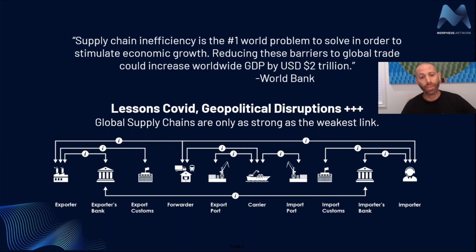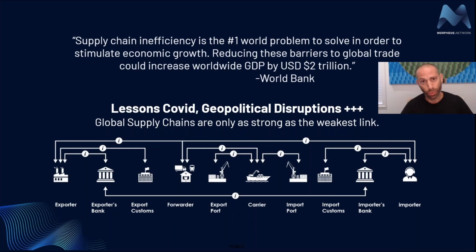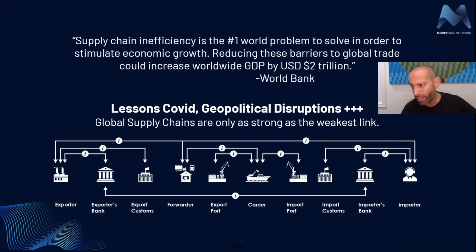The number one problem in the world to solve to stimulate economic growth is still supply chain barriers. This is a claim from the World Bank — a $2 trillion problem about five years ago, and now it's a much larger problem. We've seen this in the real world based on the resiliency issues from COVID, geopolitical disruptions, the Ukraine war, the need to procure things at a local level, and the importance of reducing carbon footprints. There are about 40 points of handling down the average supply chain.